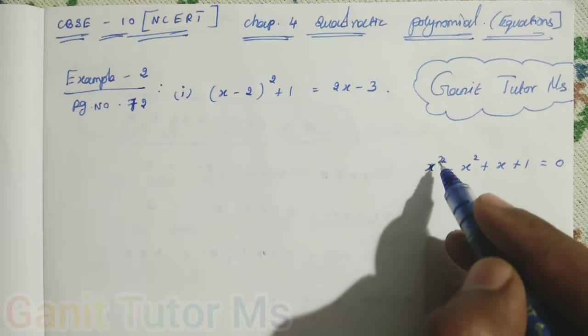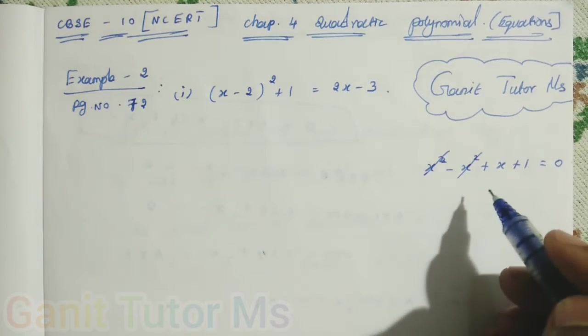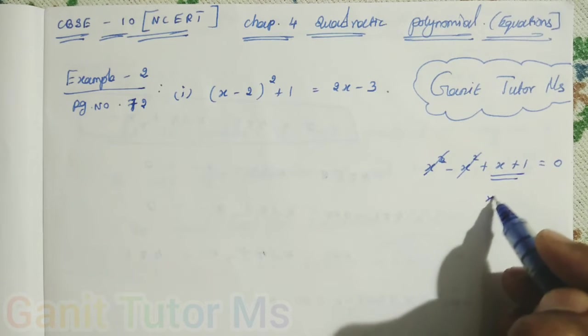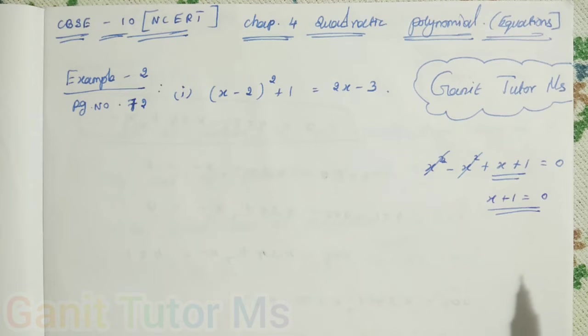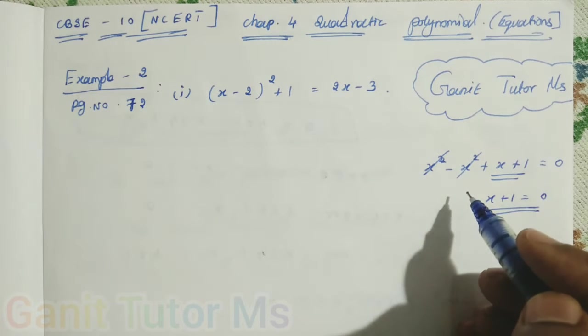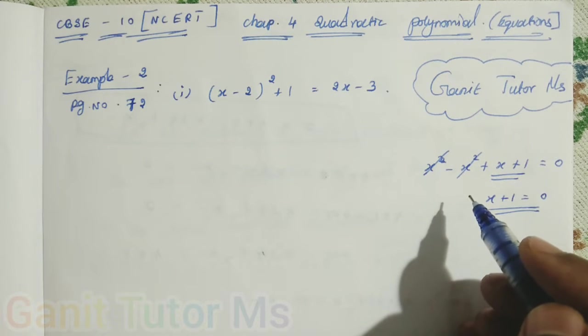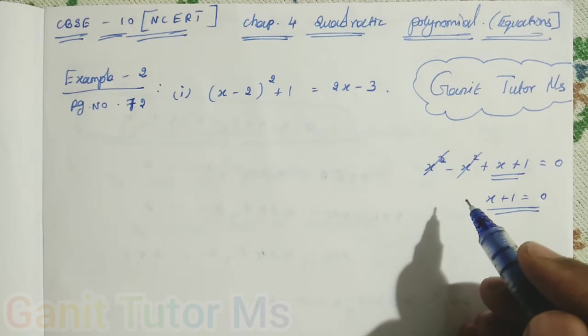When you are solving this, plus x squared minus x squared cancel. Here remaining x plus 1. So, x plus 1 equal to 0. Now, it is linear, right? Clear? So, the same way, we should check the given equation is quadratic or not. When we are simplifying this equation into general form, then we will be able to identify that it is a quadratic equation or what kind of equation it is.